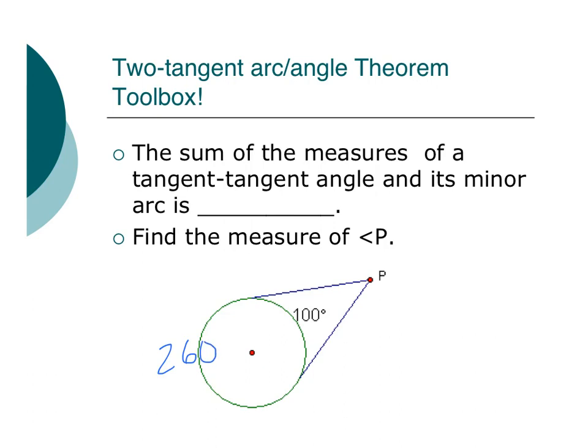And if I want to find my tangent-tangent angle, my out angle, I'm going to take the difference of those two, 260 minus 100, which is 160, and I'm going to divide that by 2, which gives me 80. So I know that angle P is 80 degrees. Well, what do those two add up to? 80, 100, 180. Coincidence? I think not. So this is 180 degrees.